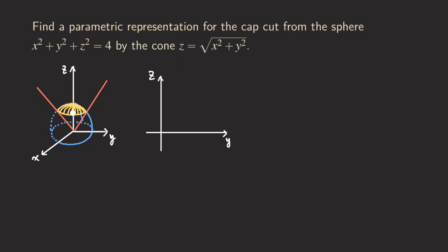So which part are we talking about? We want this portion right here. So this is a cone, this is a sphere, so we cut that cap out. And as you can see that this cap is still part of the sphere, so that means we can use spherical coordinates to do the parametrization.